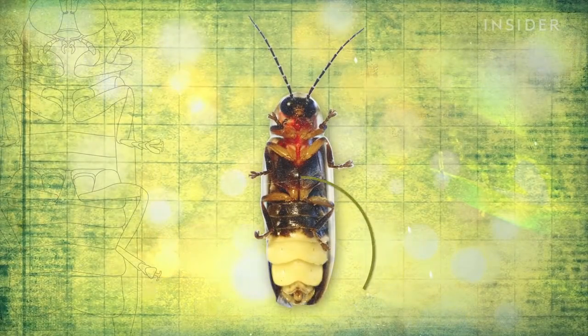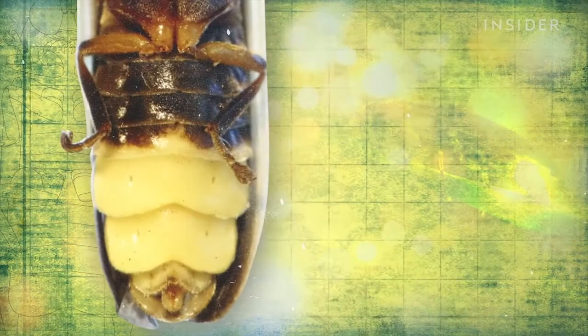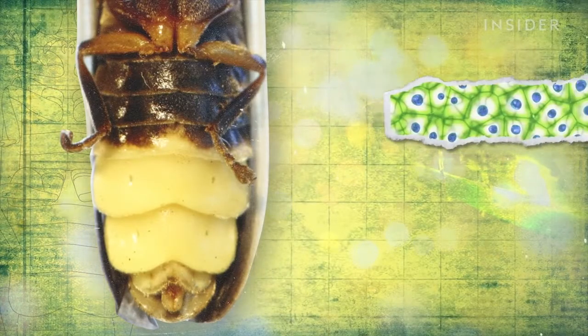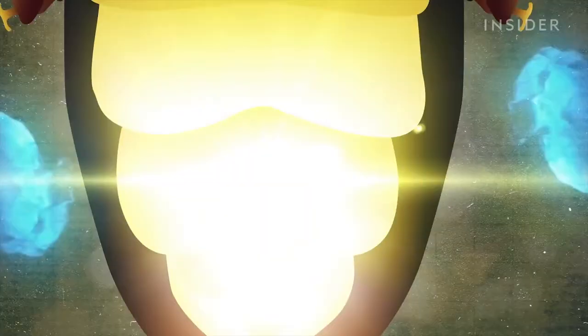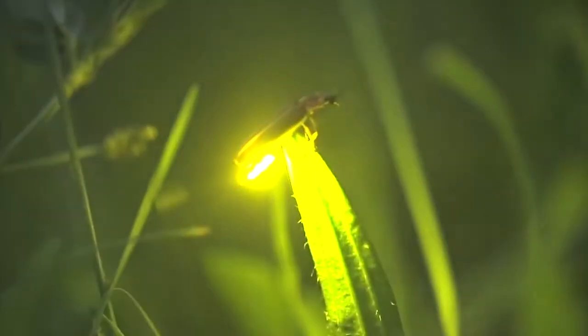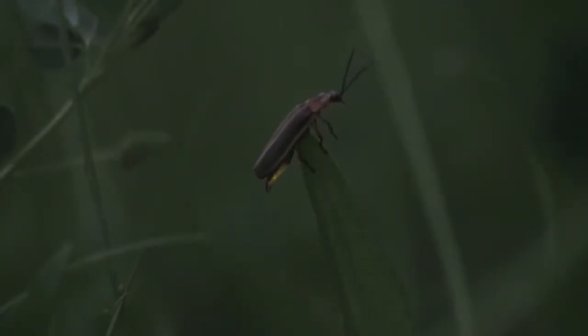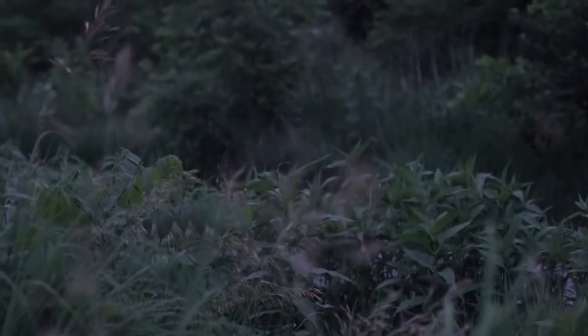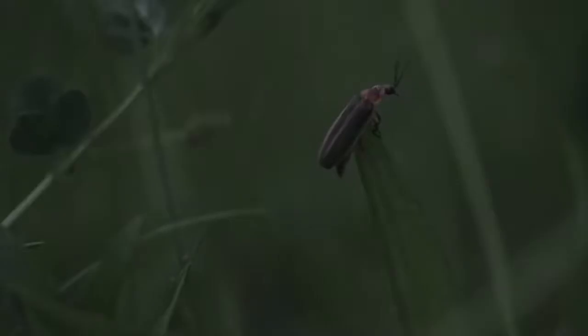The lantern or light organ of a particular Photuris Firefly is covered with jagged scales that dramatically enhance the brightness of the light that the insect produces. Scientists have not studied all species of this firefly.